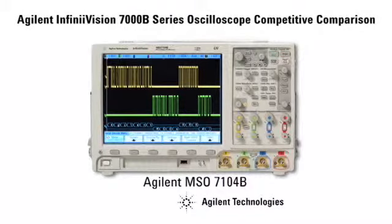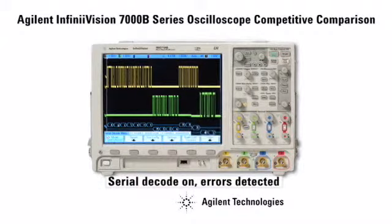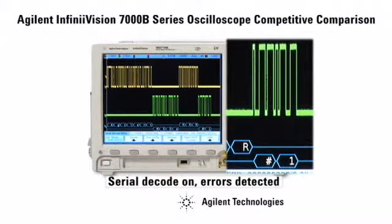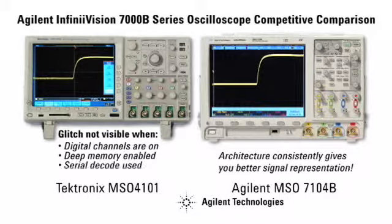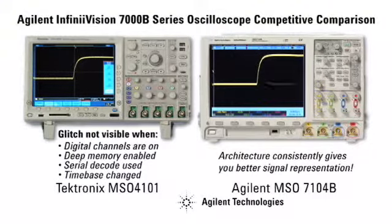Agilent oscilloscopes are the only oscilloscopes in the world that use a hardware-accelerated serial decode, ensuring that you get the best representation of your signal. On the Tektronix scope, when digital channels are turned on, deep memory is enabled, serial decoding is used, or even when the time-based setting is changed, update rates are slowed to the point that analog measurements are compromised and intermittent problems may never be captured.